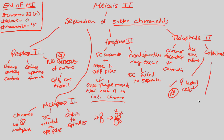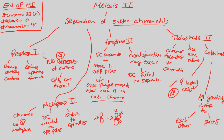An important distinction is that all four of these haploid cells are genetically different — different from each other and also different from the parent cells they came from. This is important because it promotes genetic variation.